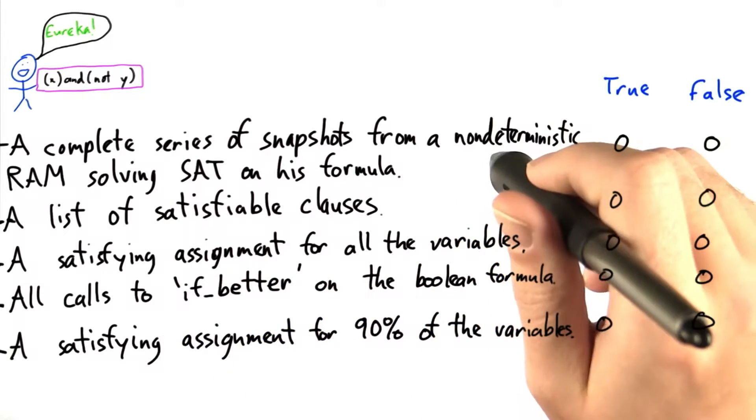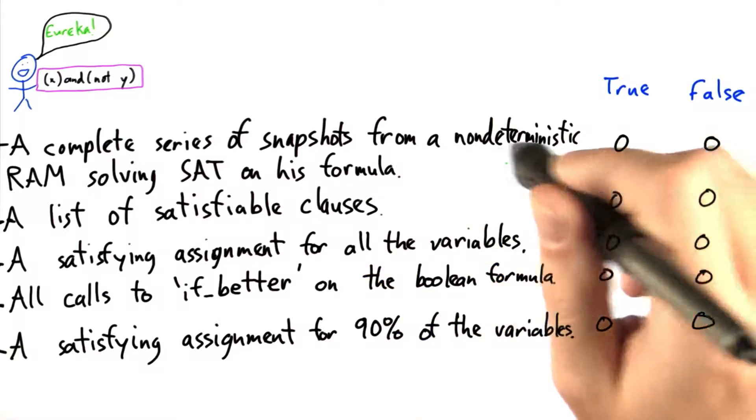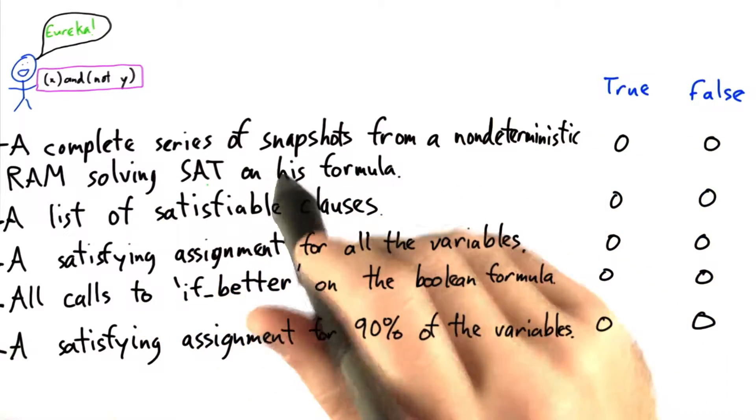Alright, first, if we had a complete series of snapshots from a non-deterministic RAM solving SAT on his formula, well, a non-deterministic RAM can solve SAT in polynomial time.